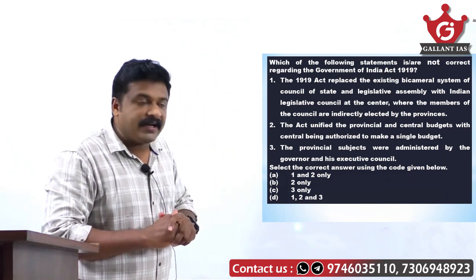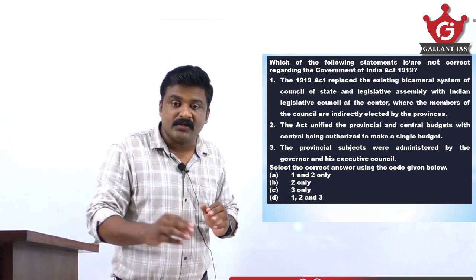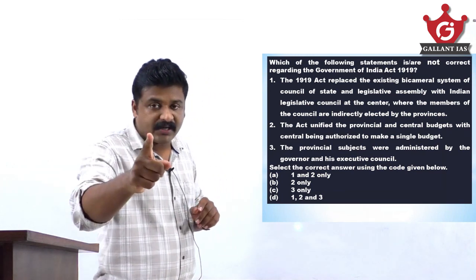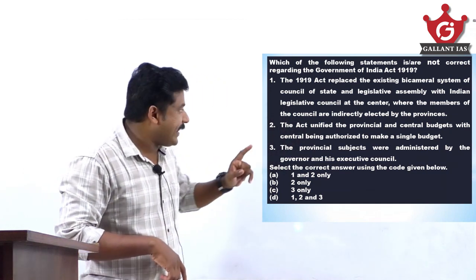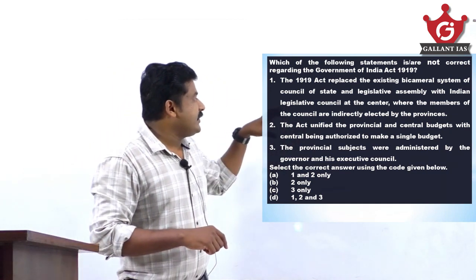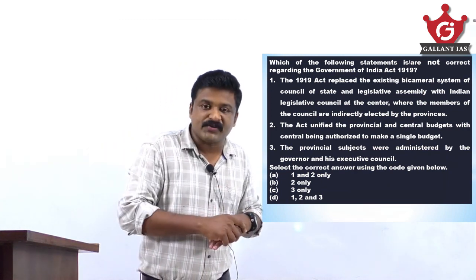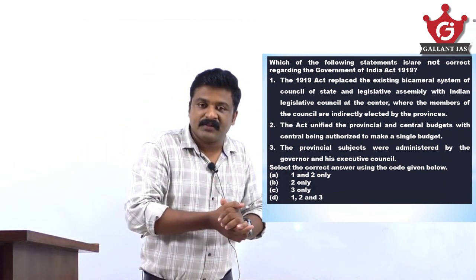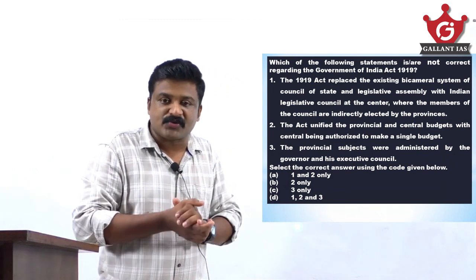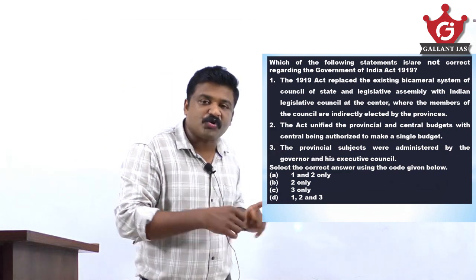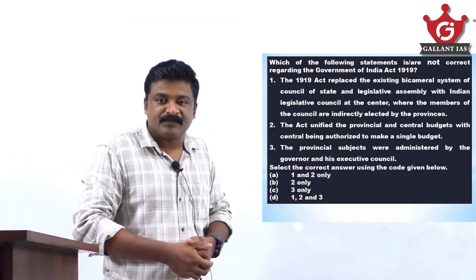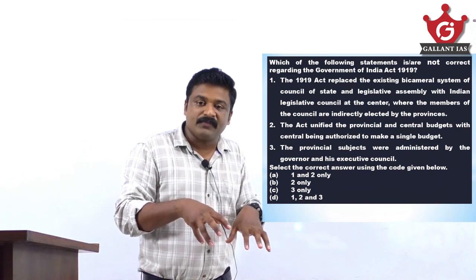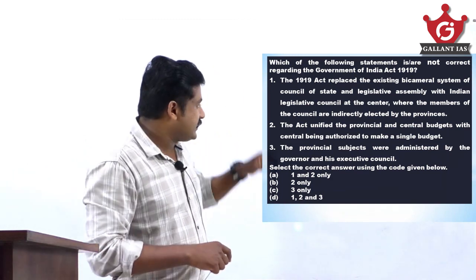Which of the following is not correct regarding the 1919 Act? The Government of India Act 1919 is very important — constitutional reforms are important, and every year UPSC asks minimum one question from this. Three statements are given. Statement 1: the 1919 Act replaced the existing bicameral system. Apply your common sense here — bicameralism was actually introduced by this 1919 Act only. Before that, there was no upper house or lower house system. Central bicameralism was first introduced by this Act, so there is no replacement of any existing bicameral system. That eliminates the first statement as being wrong.